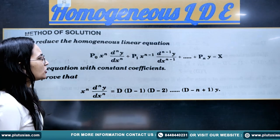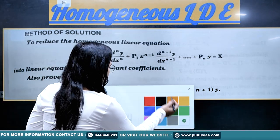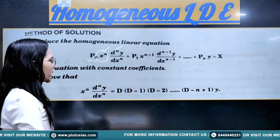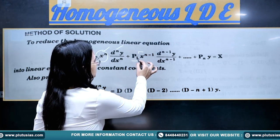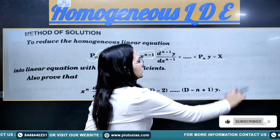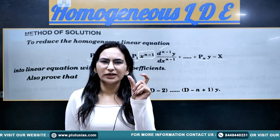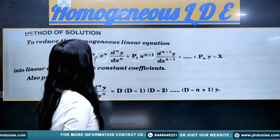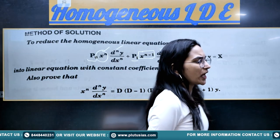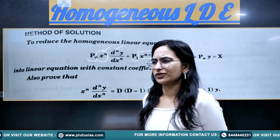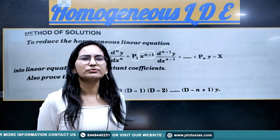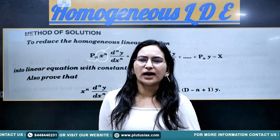Let's look at how a homogeneous linear differential equation generally looks. Any differential equation of this type has p₀ times x^n with the nth order derivative of y, then p₁ times x^(n−1) with the (n−1)th order derivative, and similarly some constant times y on the left-hand side and a function of x on the right-hand side. This is known as a homogeneous linear equation. But we don't have any existing method to solve it directly — so specifically for this, we have to do a substitution to change the independent variable.